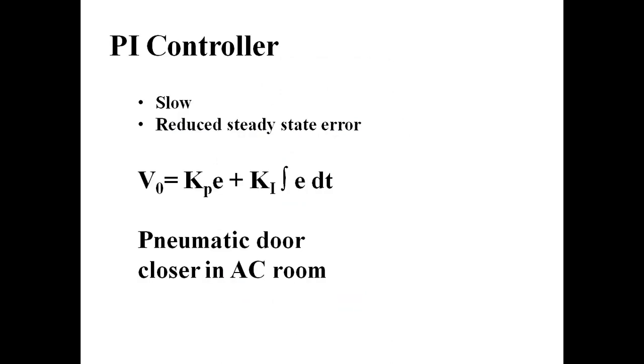We use some controllers. PI controller is very popular. It is slow, but it has reduced steady state error. You have a proportional part and you have an integral part. Your pneumatic door closer in AC room is a mechanical PI controller. Because of this door closer, when you close the door, the door gets closed very slowly.